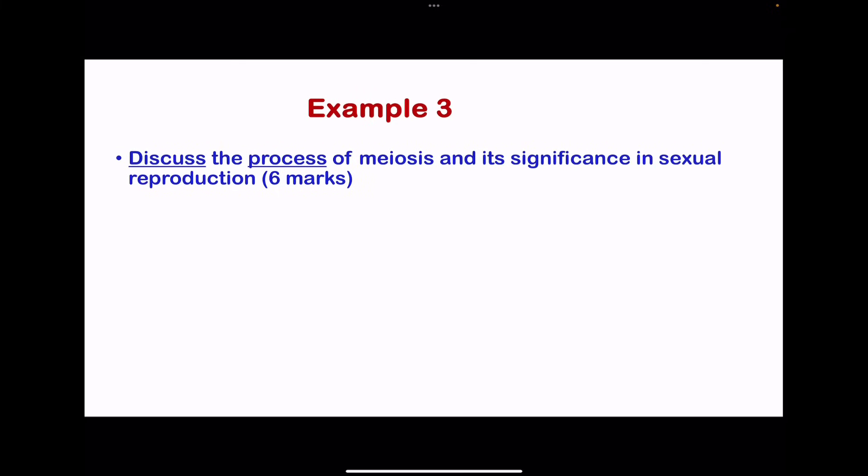The third example: discuss the process of meiosis and its significance in sexual reproduction. Meiosis is a type of cell division in sexually reproducing organisms resulting in formation of gametes - sperm or egg cells. The process involves two successive divisions, meiosis I and meiosis II, each consisting of prophase, metaphase, anaphase, and telophase stages.